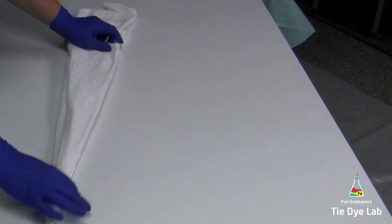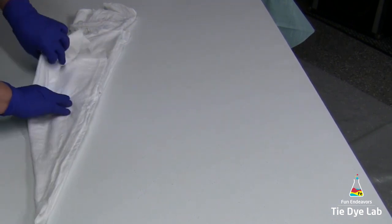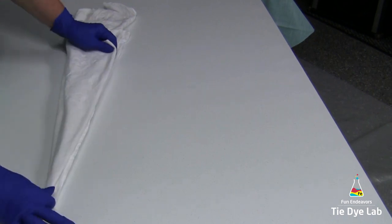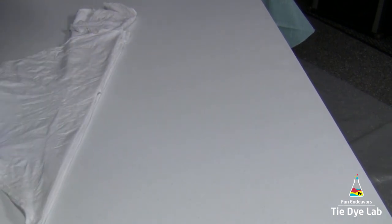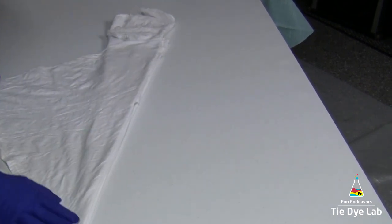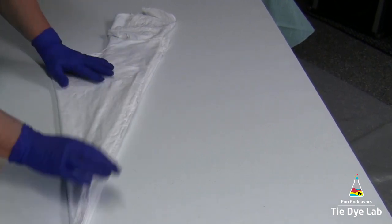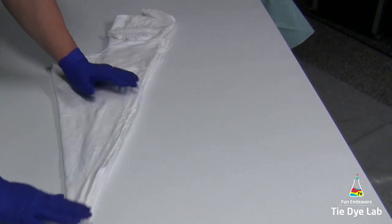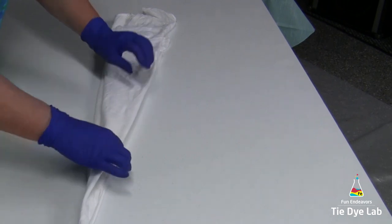When I'm making my folds for this star flower, I'm folding to the same side of the shirt each time. As you can see here, my shirt came unfolded when I turned it over, so I'm just fixing that and making the other fold.